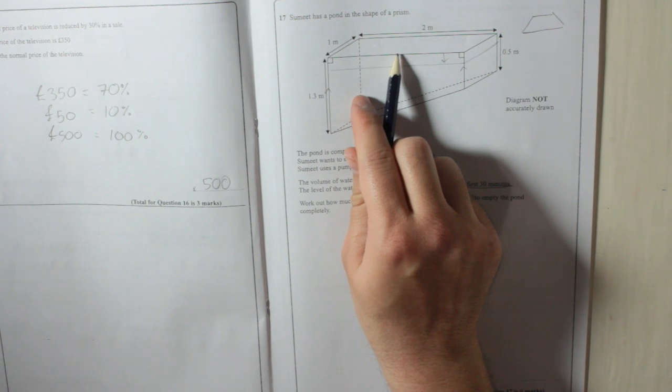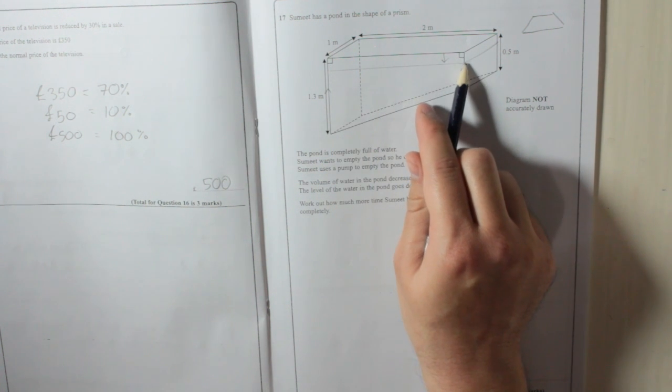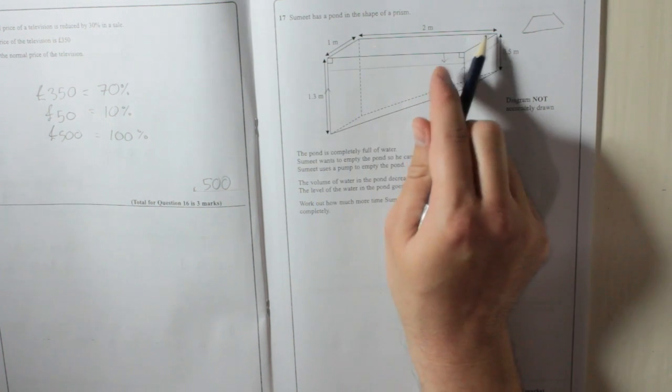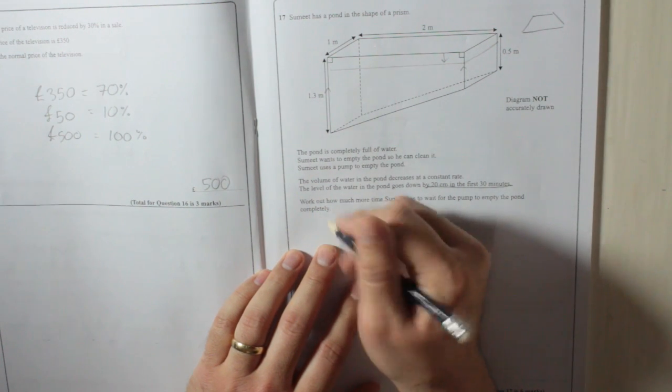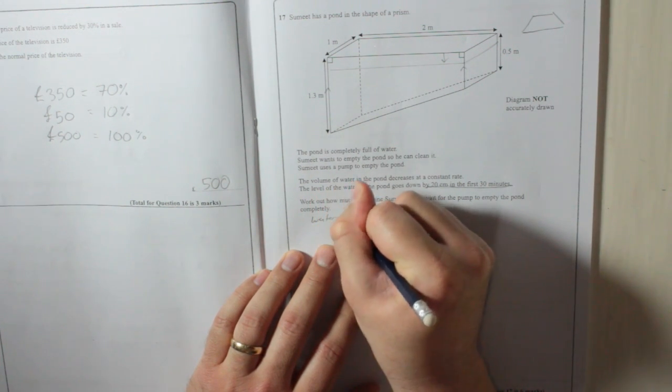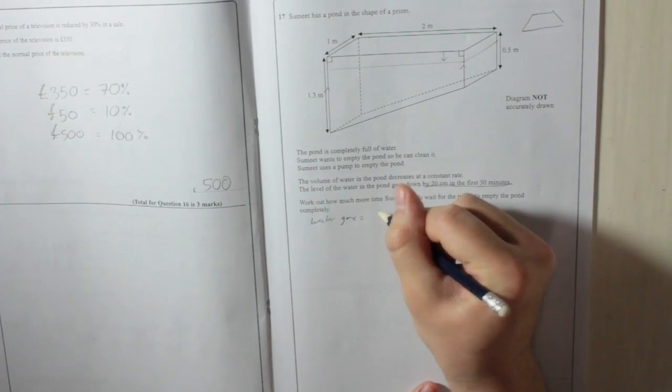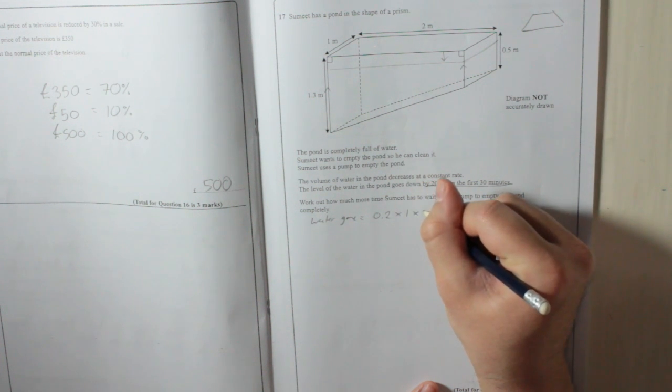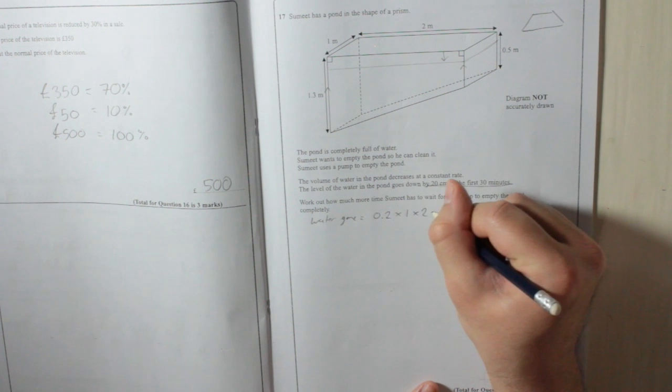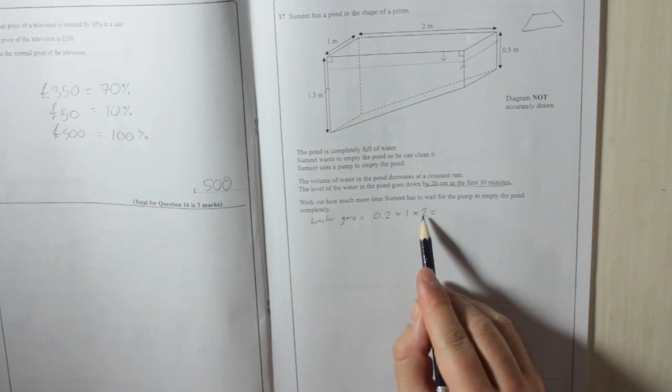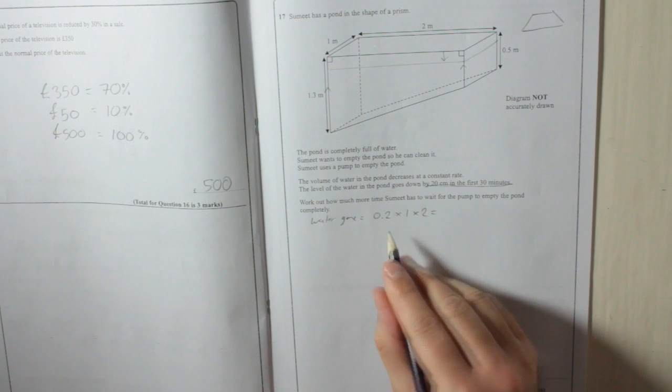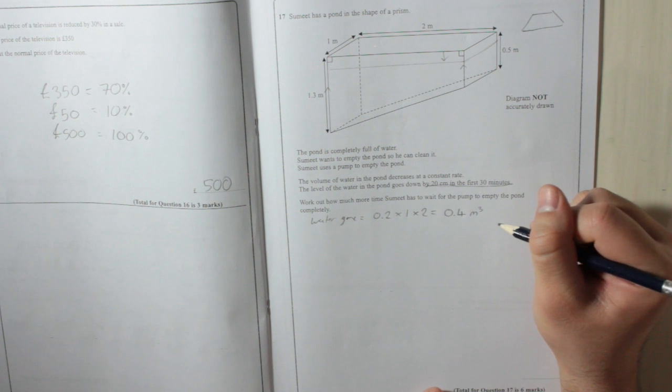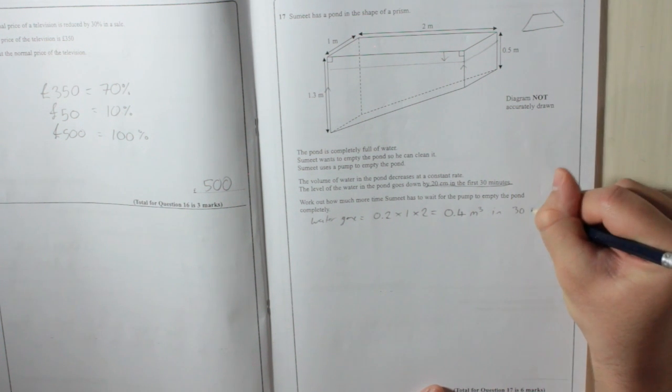The volume of that water there, because it's a cuboid, is just the 20 centimeters. Remember, we've got to use meters. So 0.2 times by 1 times by 2. Water gone equals 0.2 multiplied by 1 multiplied by 2, which is 0.4 meters cubed in 30 mins.